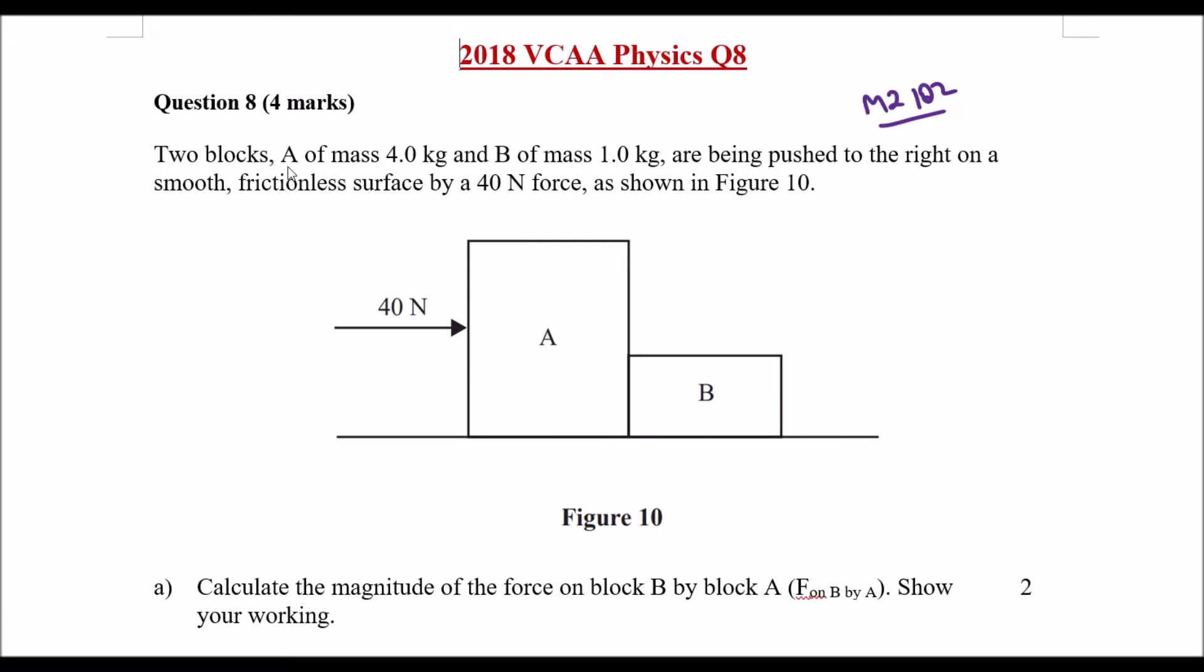We have two blocks, A of mass four kilograms, so four kilograms here. We have B with one kg mass, and they are being pushed to the right on a smooth frictionless surface by a 40 Newton force, as shown in Figure 10.